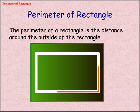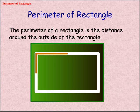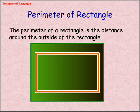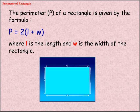The Perimeter of Rectangle is the distance around the outside of the rectangle. The Perimeter, P, of a Rectangle is given by the formula: P equals twice of L plus W, where L is the length and W is the width of the rectangle.